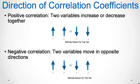A negative correlation coefficient means that the two variables have a negative linear relationship. This means that the two variables move in opposite directions. As the X variable increases, the Y variable decreases and vice versa. It is an inverse relationship.